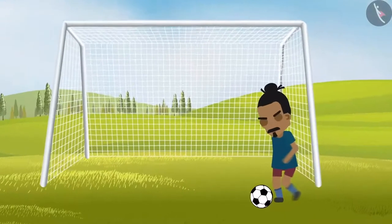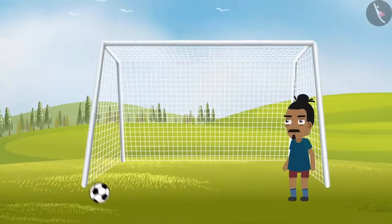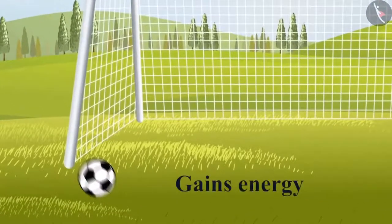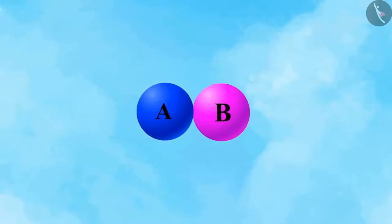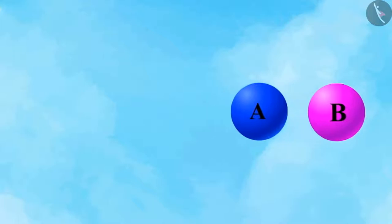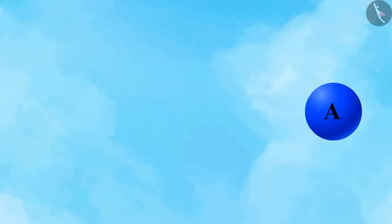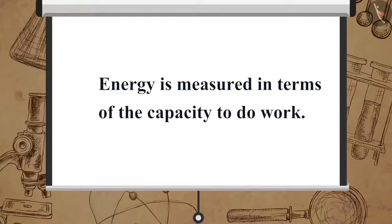The object which does the work loses energy, whereas the object on which work is being done gains energy. Suppose ball A exerts a force on another ball B — ball A transfers its energy to ball B. After receiving the energy, ball B possesses the capacity to do work. Therefore we can say that any object that has energy can do work. Thus energy is measured in terms of the capacity to do work.